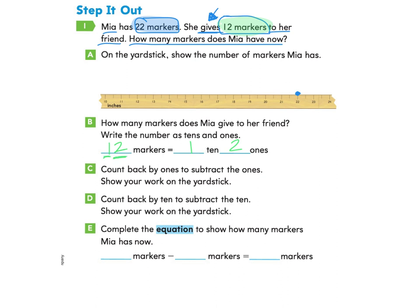Now part C says to count back by ones to subtract the ones. Show your work on the yardstick. So I look here and I'm only going to take away just the ones first. So I go to my number 22 and I'm just going to take two away. One, two. When I take just two away, I land on the number 20.